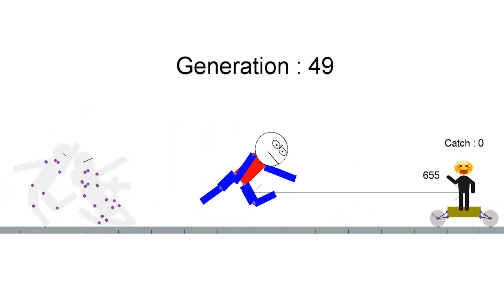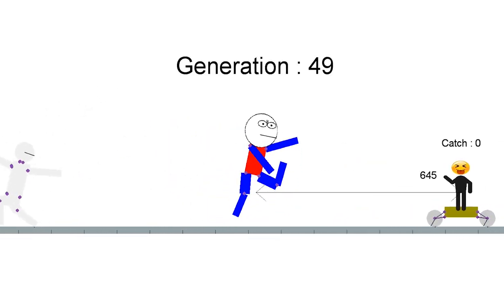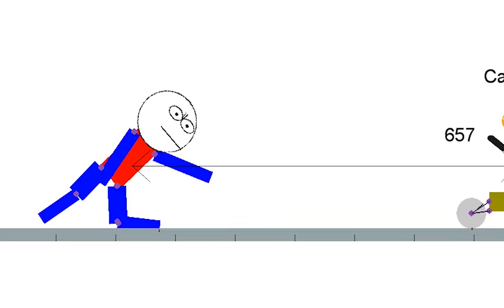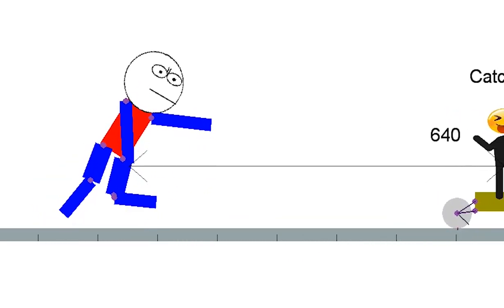Last time, I made AI move forward, but it was weird. So this time, I added some limitation to moving parts. This time, I'm expecting AI to walk like humans.